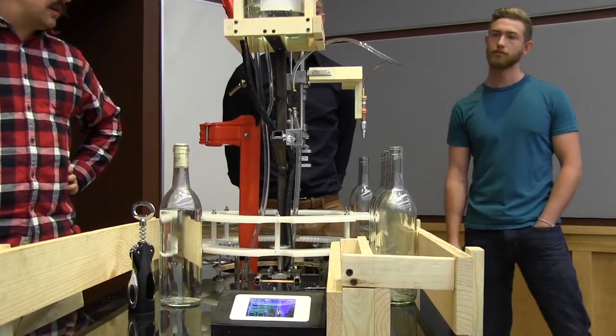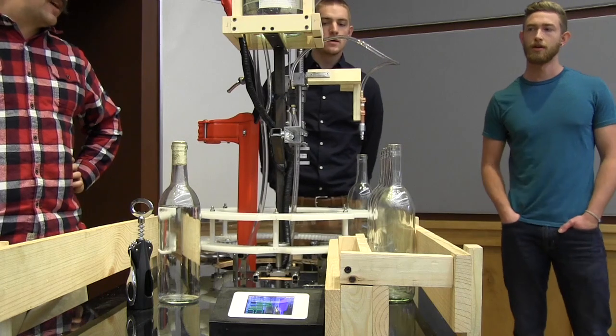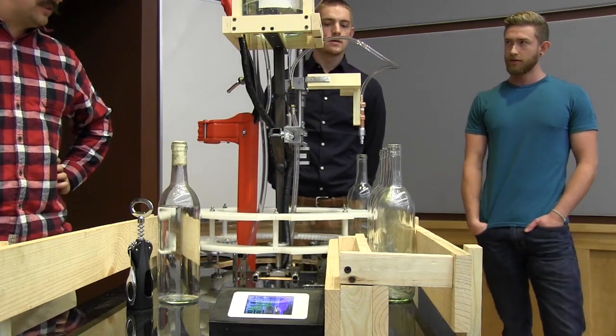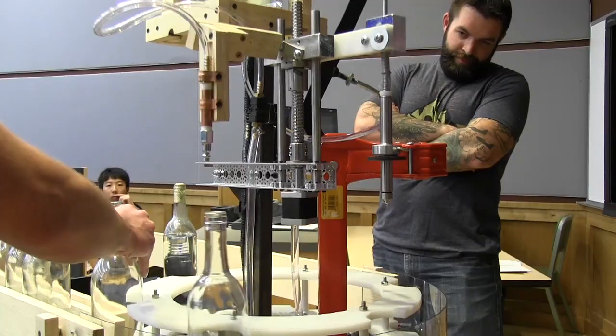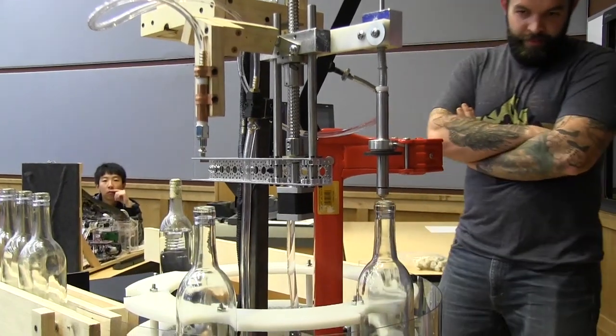So it does 60 degrees, the stepper motor ramps up. It's about the fastest speed you can get it to go so far. The purge valve is going to open, purge it for three seconds with nitrogen. It will rotate and now it will go for a longer time for filling.